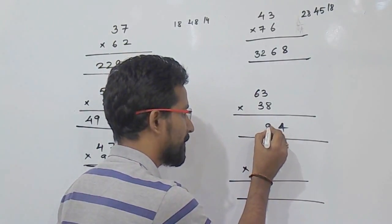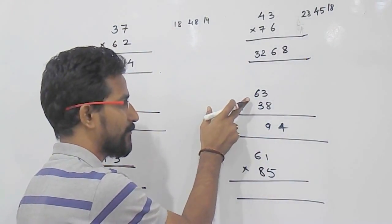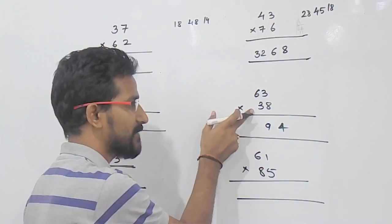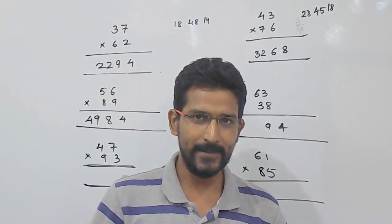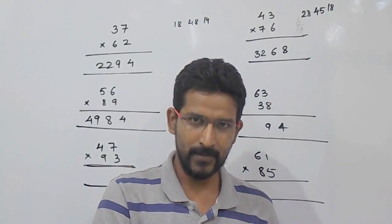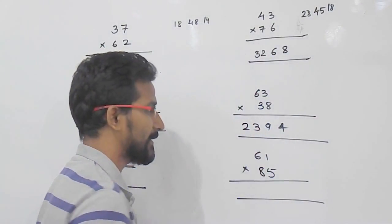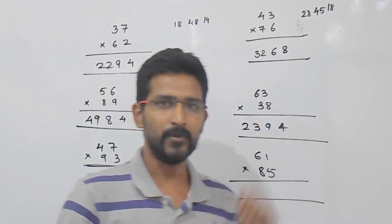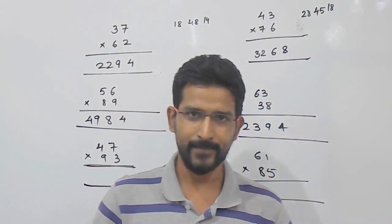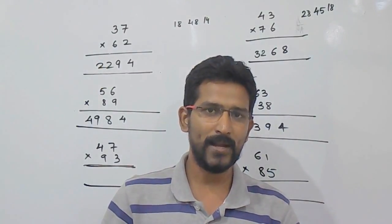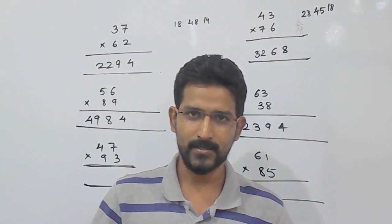So, we will write 9 here. Then, 5 will be carried forwarded. Last step, what we have to do? Multiply the tens place value. So, 6 into 3 that is 18, plus 5 that is 23. That 5 was carried forwarded from 59. So, 18 plus 5 that is 23. So, the answer is 2394.